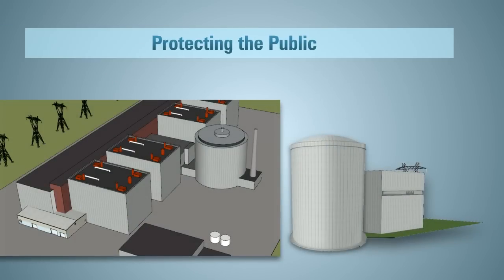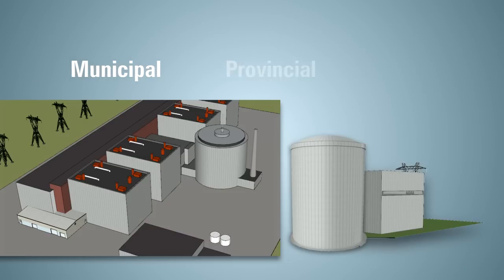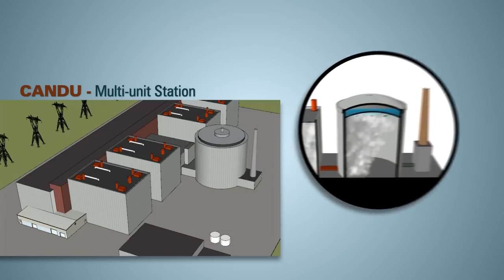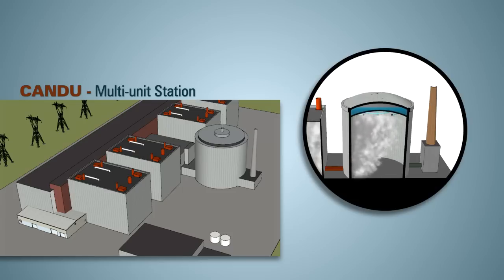At this point, federal, provincial and municipal emergency plans have been activated. To protect the public, health officials have evacuated the area to prepare for controlled venting of either the vacuum building or reactor building. Controlled filtered venting lowers the internal pressure and reduces the amount of radiation being let out into the environment.